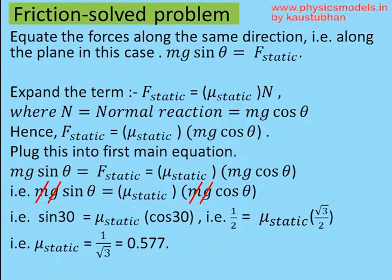Therefore, when we equate Mg sin θ and static friction force, you get Mg sin θ equal to μ_static into Mg cos θ. The Mg's cancel on both sides and you get μ_static equal to sin θ by cos θ, which is 0.577.